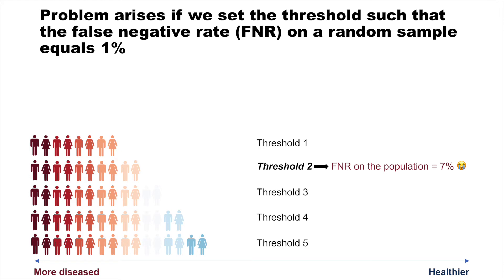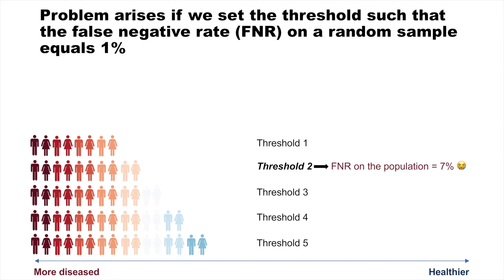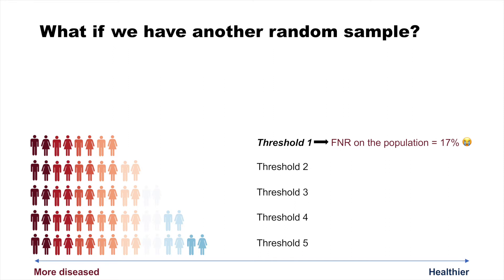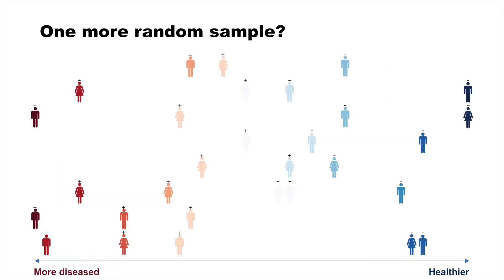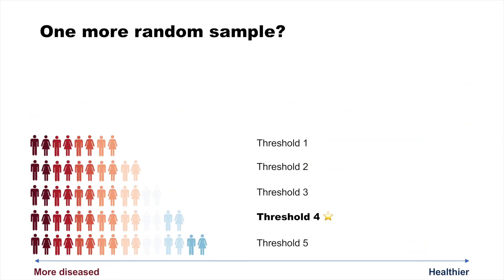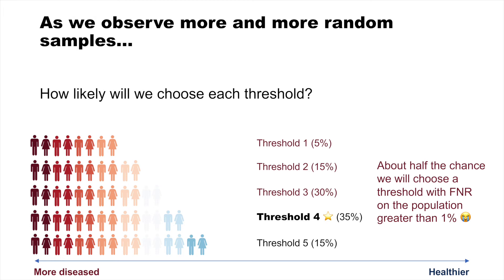which however will give a false negative rate on the population equal to 7%. With another random sample, this intuitive approach gives an even higher false negative rate on the population of 17%. With one more random sample, this approach finally selects the optimal threshold, but as we have seen, there is no guarantee that the optimal threshold will be selected from a random sample. In fact, if we observe more and more random samples, we will see a distribution of selected thresholds, and for about half the cases we will choose a threshold that gives a false negative rate higher than 1% on the population.